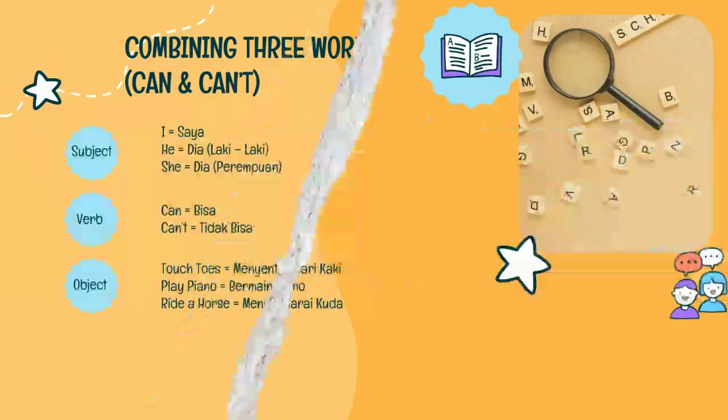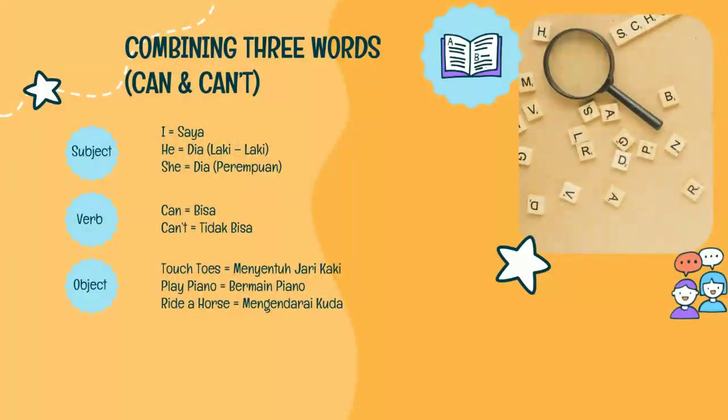Pada kesempatan kali ini, Mister akan menjelaskan sedikit tentang combining three words: can and can't, atau dalam bahasa Indonesianya adalah menggabungkan tiga kata menjadi sebuah kalimat. Di dalam sebuah kalimat itu terdiri dari subjek, verb, dan juga objek. Di sini Mister hanya menyebutkan contohnya saja. Yang pertama itu ada subjek, contohnya ada I — artinya adalah saya.